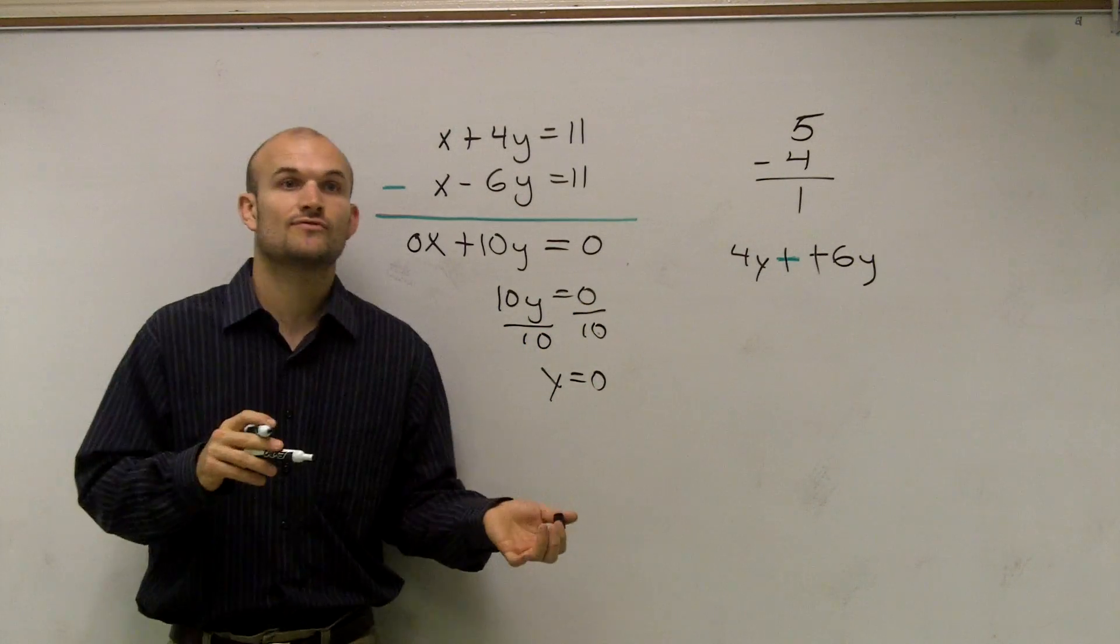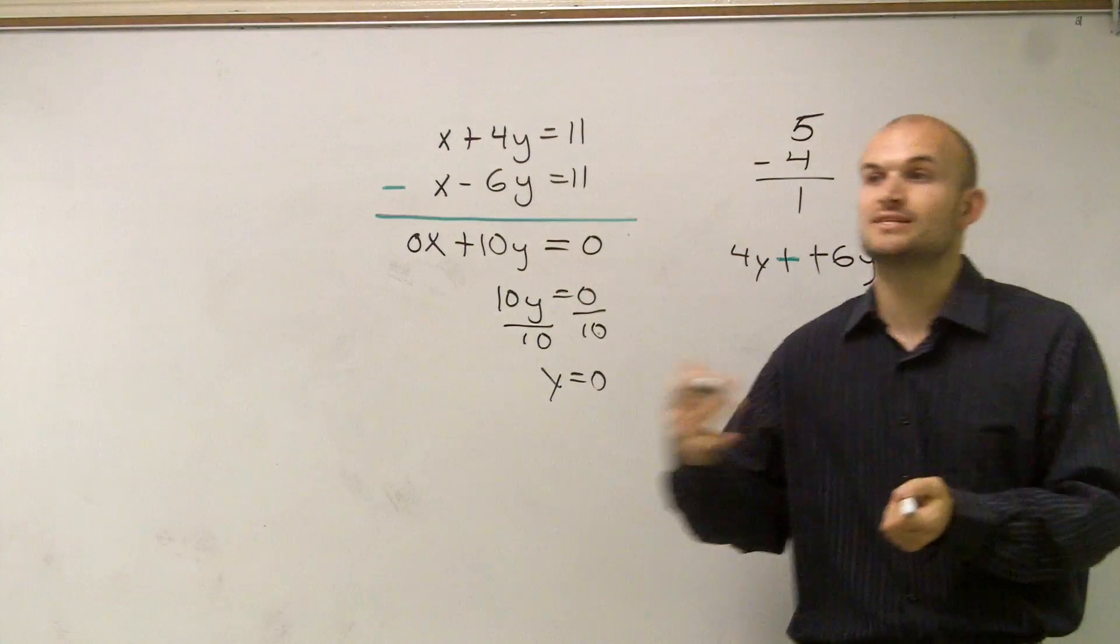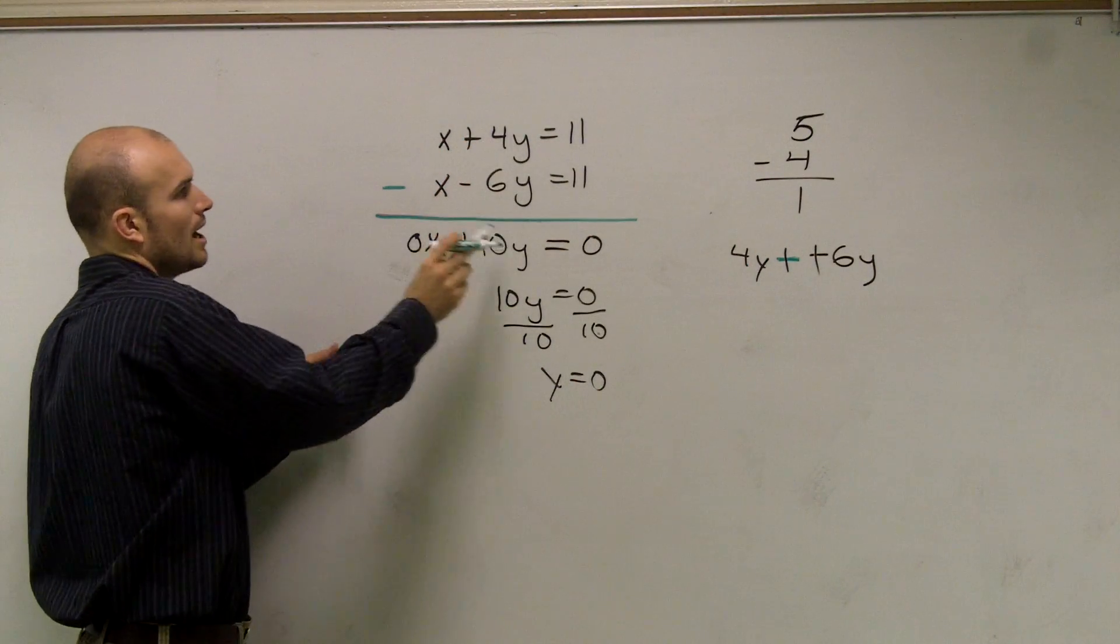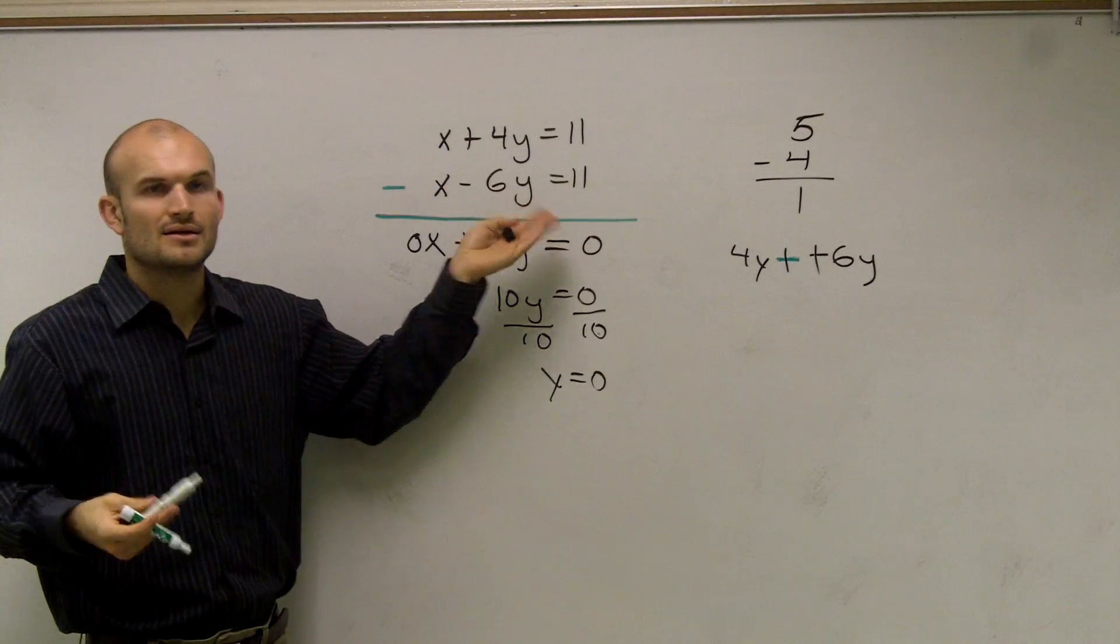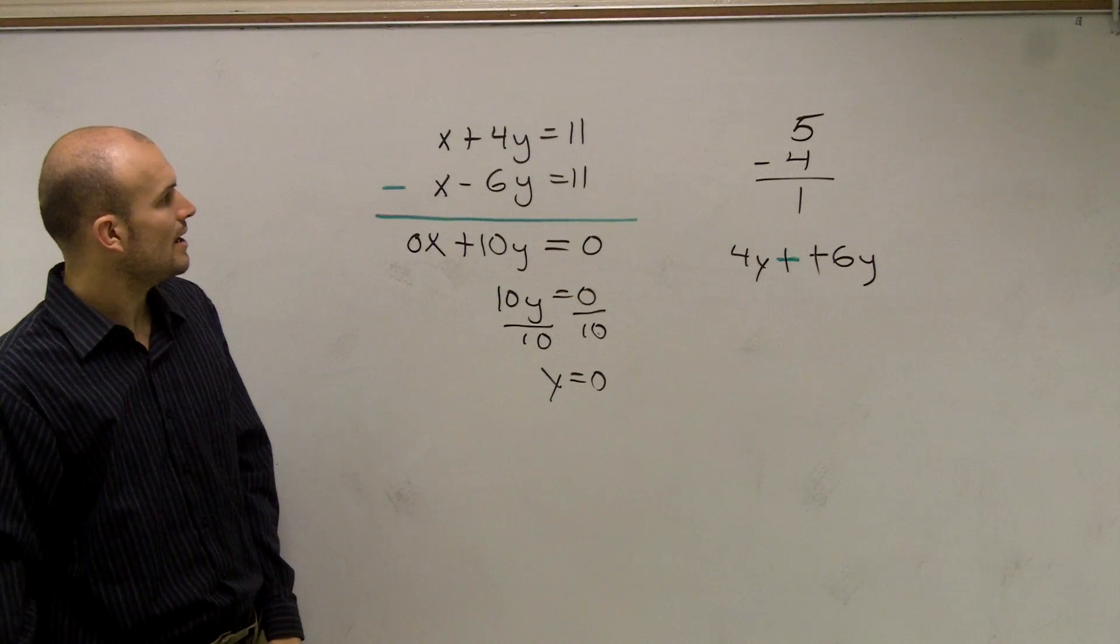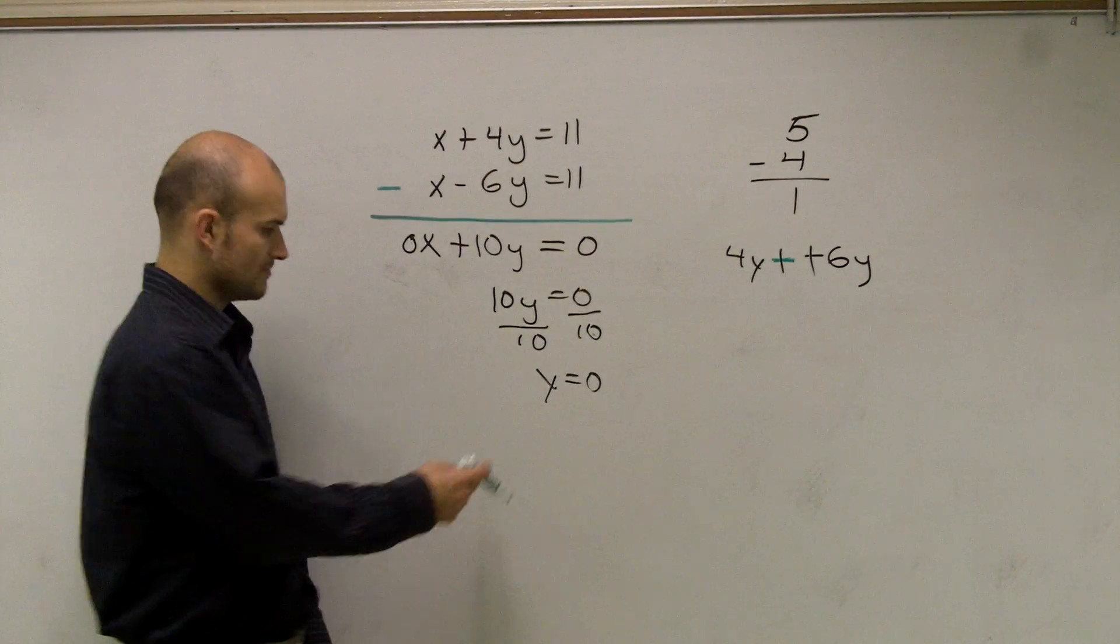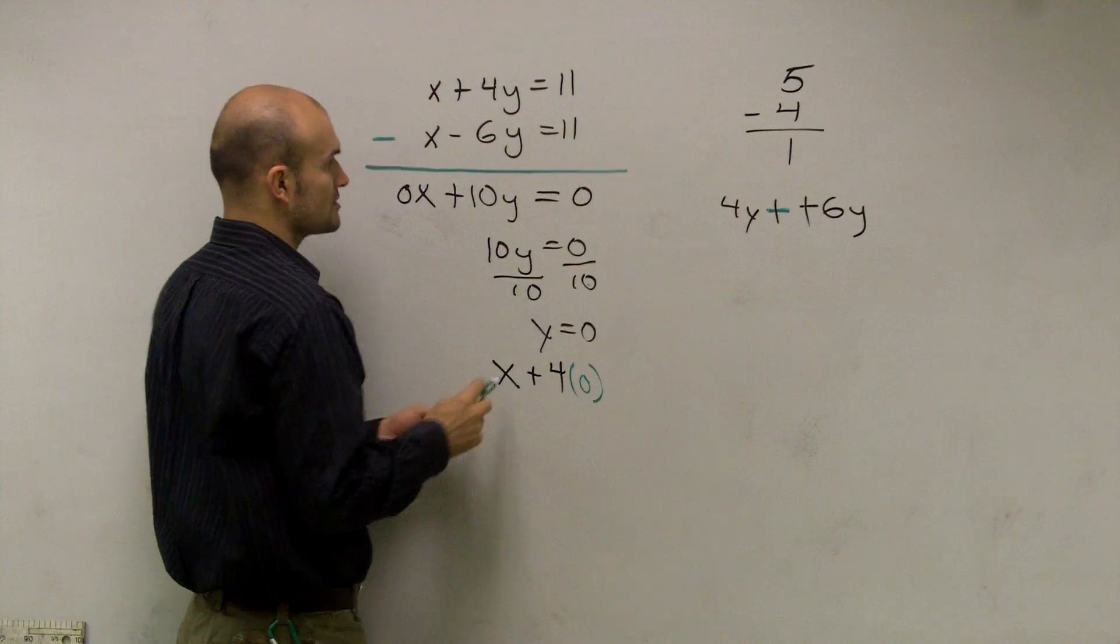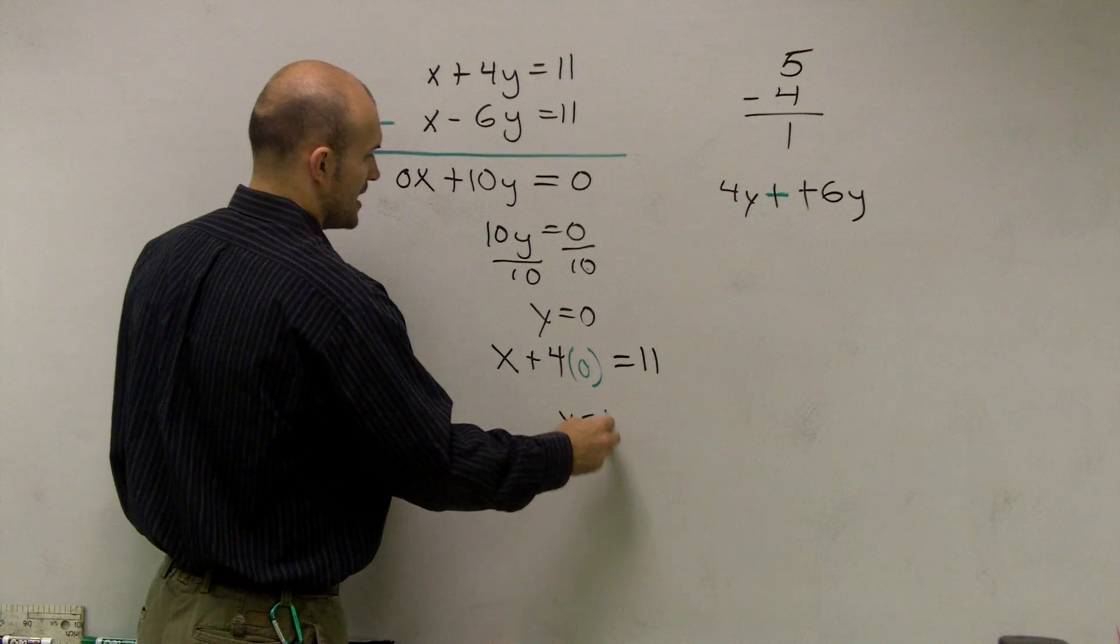But now we have to use what we learned from substitution. Remember, when we found one variable, to find the other variable, we need to substitute it back in. So I'm going to put a 0 in for the y. Now it's a little bit difficult in elimination because none of these are solved for x, right? So it doesn't matter which equation you do. Just plug it into one of them. I usually like to do the ones without negatives and stuff. So let's just plug it into this one. So I'll say x plus 4. Instead of times y, I can put in what y equals. Therefore, x equals 11.